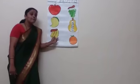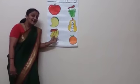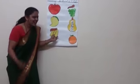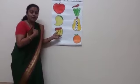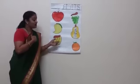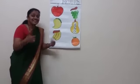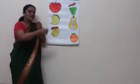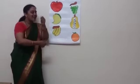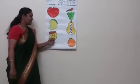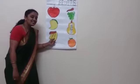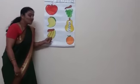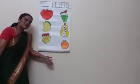Now next, banana. Do you like banana? I like banana. Why? Because they have no seeds inside, so I like banana. I peel the banana and eat them. Which fruit is this? Banana. And the color of banana is yellow.